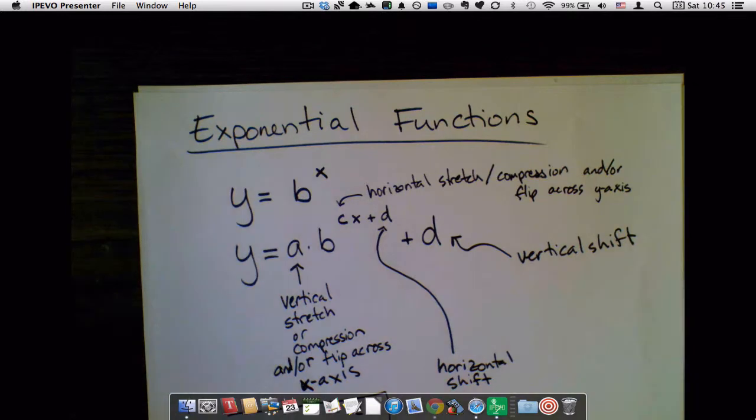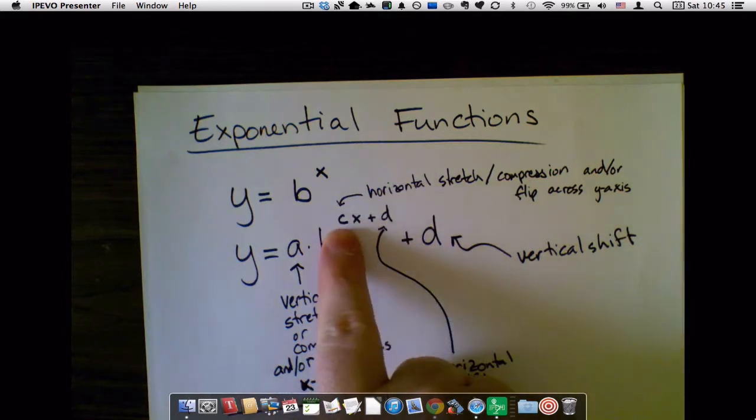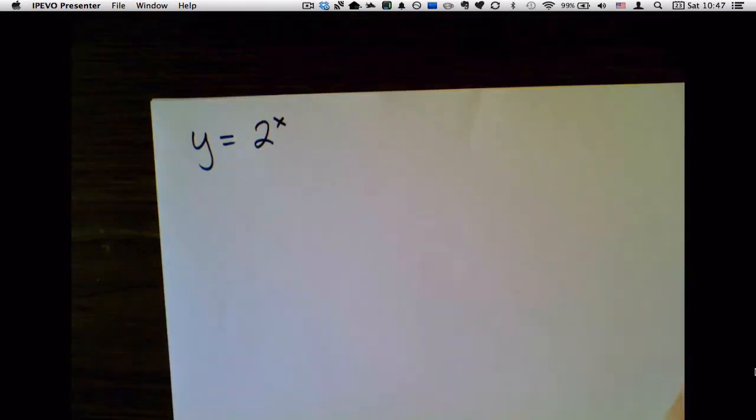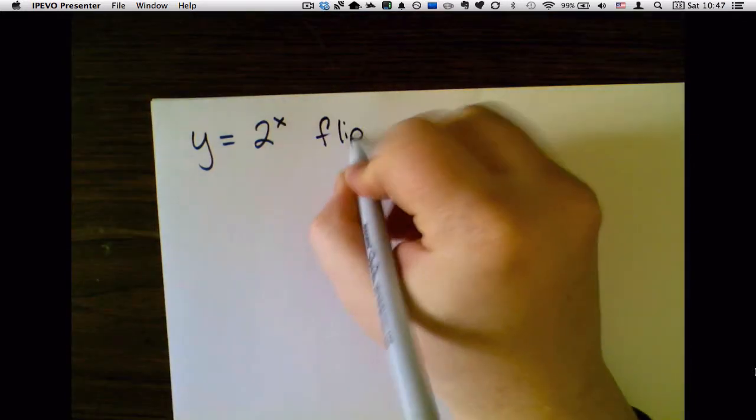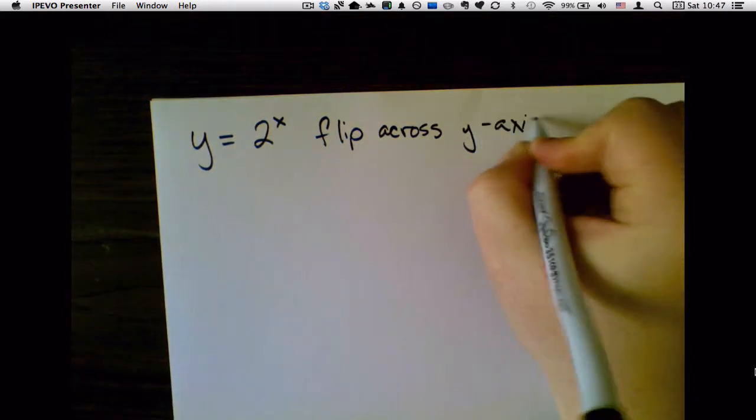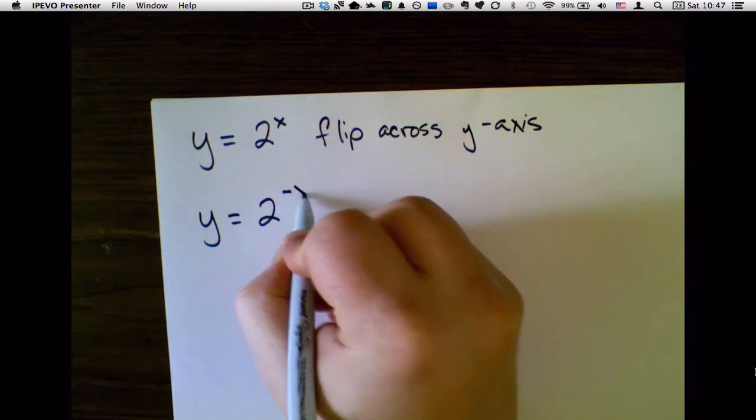But remember, if a function is flipped across the y-axis, that means this constant must be negative, right? So let's see how that works. Let's take y = 2^x. If we wanted to flip that across the y-axis, we would write y = 2^(-x).